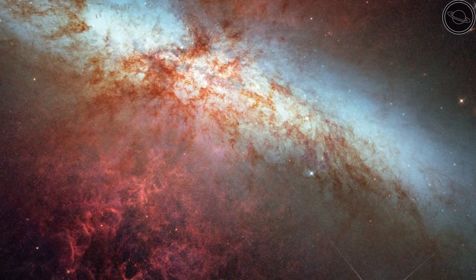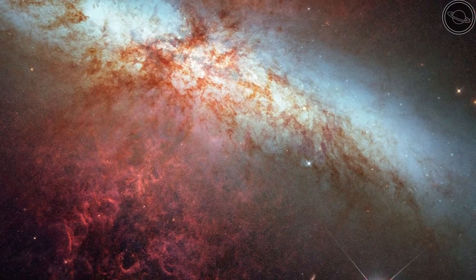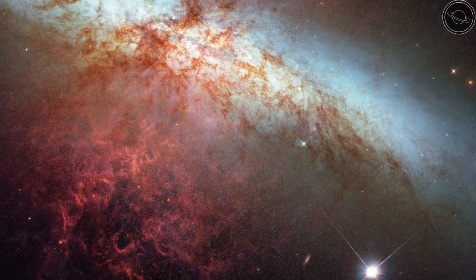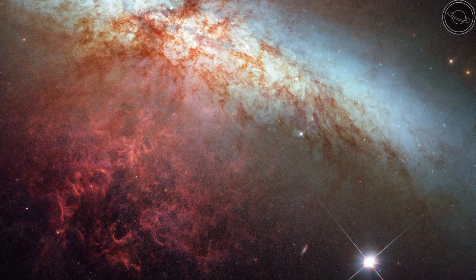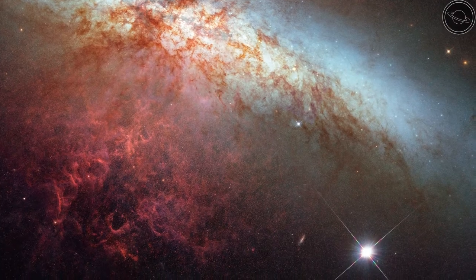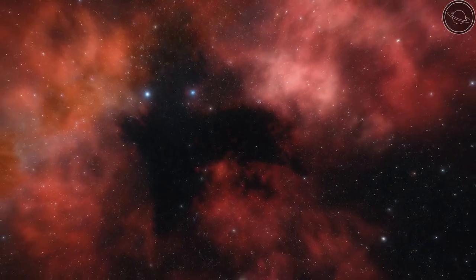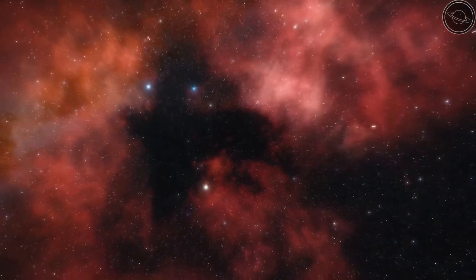The useful thing about Type 1A Supernovae is that they explode with the same brightness every time. So, depending on how dim the supernova appears to us from Earth will depend on how far away the supernova is. When observing distant galaxies, this technique can be used to determine how far away that galaxy is.